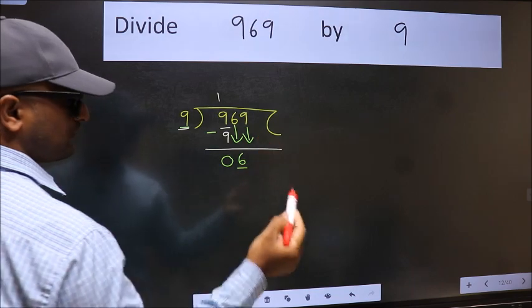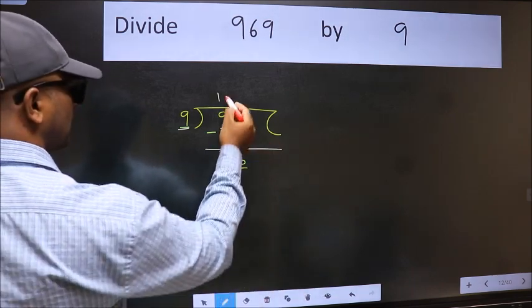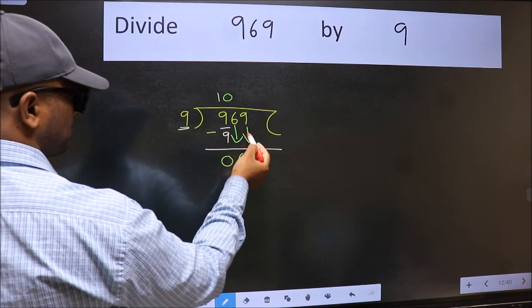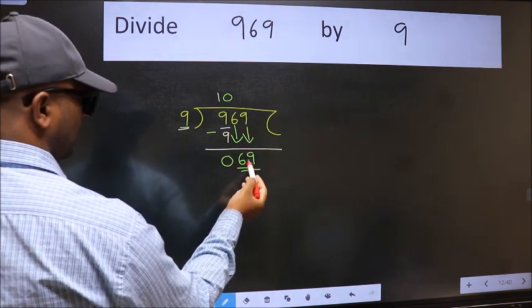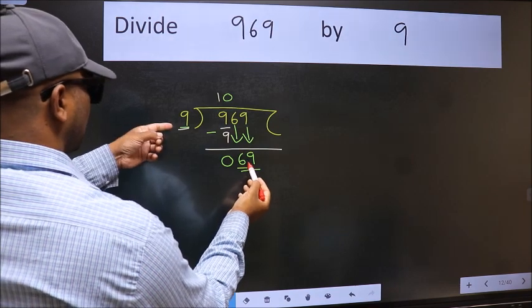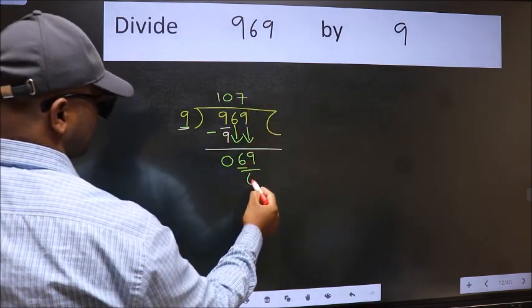And the rule to bring down the second number is we should put 0 here. Then only we can bring this number down. Now 69. A number close to 69 in 9 table is 9 7s 63.